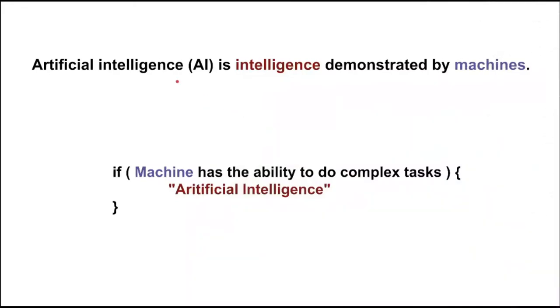Let's see another definition: artificial intelligence is intelligence demonstrated by machines. So if a machine has the ability to do complex tasks, then we can call it artificial intelligence.